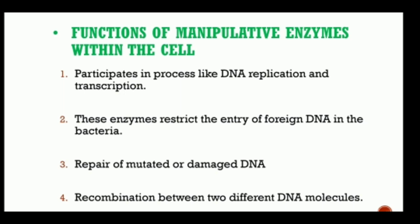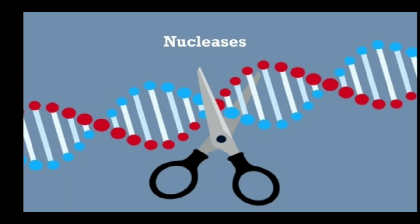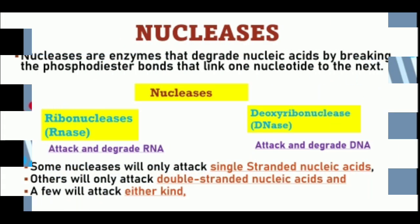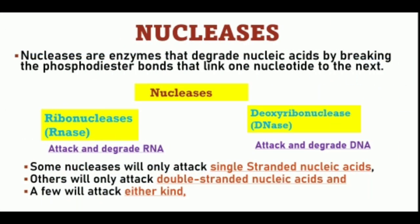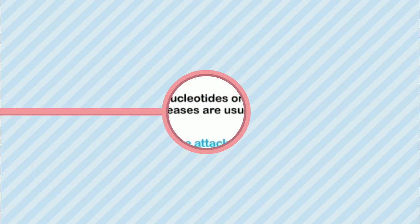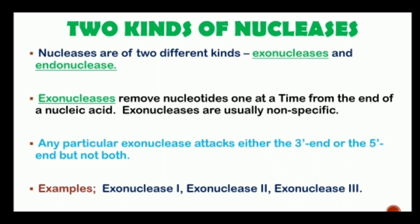Coming to the first DNA manipulative enzymes — nucleases. Nucleases are enzymes that degrade nucleic acid by breaking the phosphodiester bond that links one nucleotide to the next. Ribonucleases attack RNA and deoxyribonucleases attack DNA. Some nucleases will only attack single-stranded nucleic acid, others will only attack double-stranded nucleic acid, and a few will attack either kind. Nucleases are of two kinds: exonucleases and endonucleases.